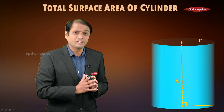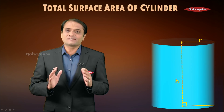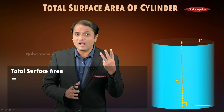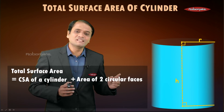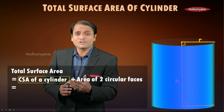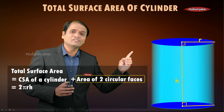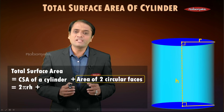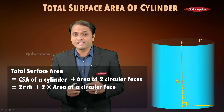Next, let us find the total surface area of the cylinder. The total surface area is the sum of the areas of all three surfaces: the curved surface area plus the areas of the two circular faces. Since both circular faces are the same size, the area of two circular faces equals 2 times the area of one circular face.